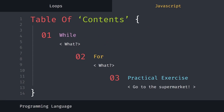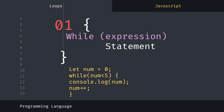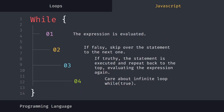I'm going to show you the while and for loops, and at the end of the video I'll present a practical exercise. The while loop has the following syntax: while(expression) statement. The expression is evaluated first — if it's falsy, it skips over the statement to the next one; if truthy, the statement is executed and repeated back to the top.